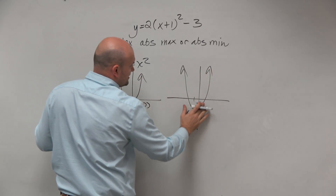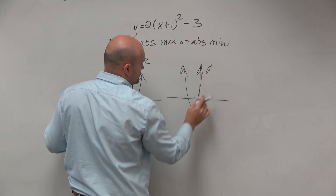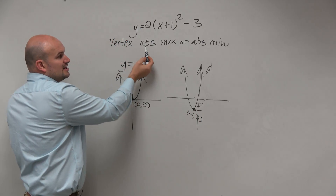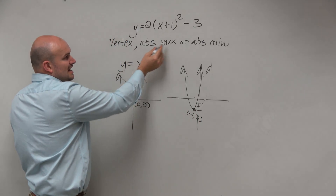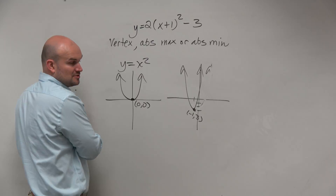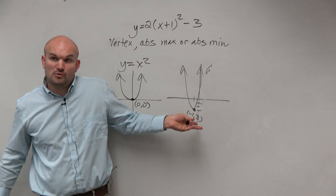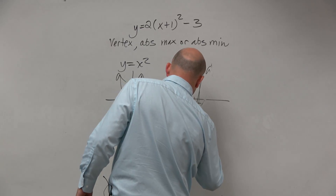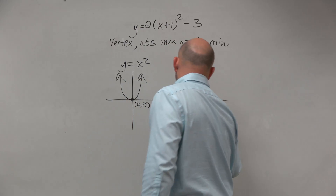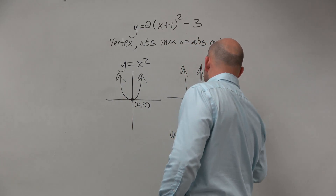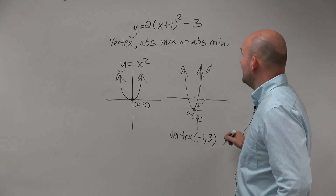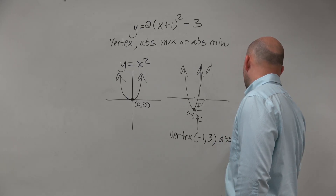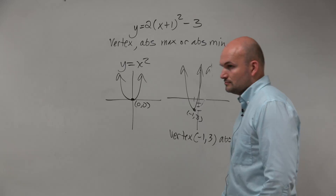You could probably make it skinnier, so it's like a stretch. But that's not really what the question is. The question is asking, what is the vertex? And is it an absolute max or absolute min? Well, you guys can see that this is the lowest point. So my vertex is at negative one, negative three, and it is an absolute minimum point.